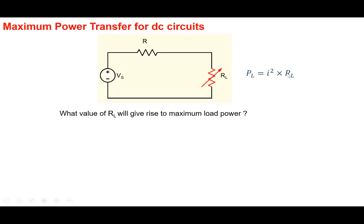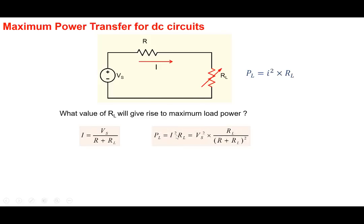The reason there is an optimum value of RL is that if you try to increase RL, this term increases but the current flowing in the circuit decreases. Because of this conflict, there is an optimum value of RL at which PL is maximized. The current I equals VS divided by (R + RL), so PL depends on RL in both the numerator and the denominator.